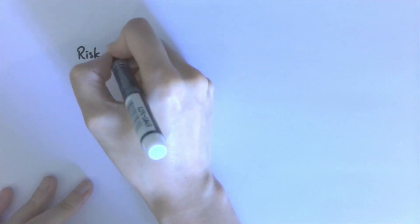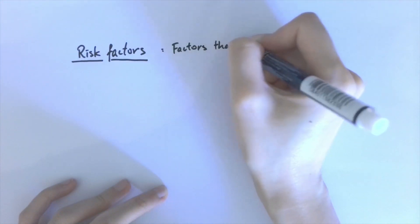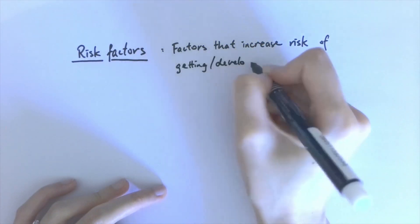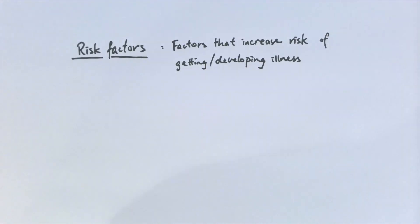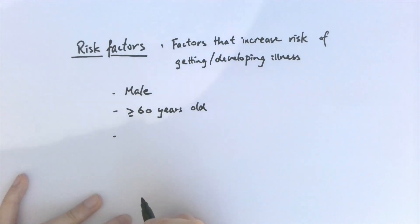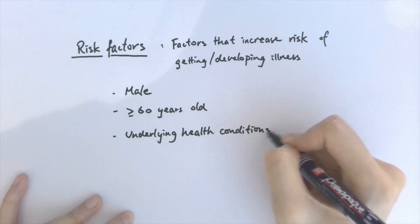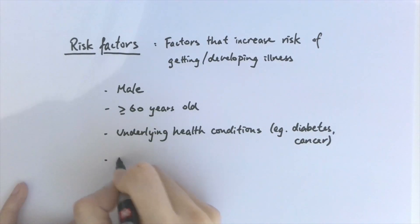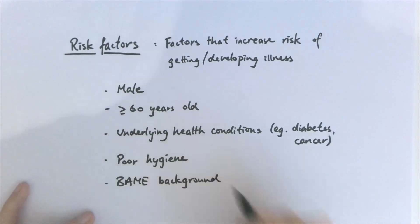Next, let's talk about the risk factors. Risk factors are things that increase the risk of someone getting or developing a disease. We don't know enough about the virus to say if any particular factors are definitely risk factors, but infection cases seem to show that males, people over 60 years old, and those with underlying health conditions are more susceptible to COVID. Other factors include living or hygiene conditions and reportedly being of a Black, Asian, or minority ethnic background.